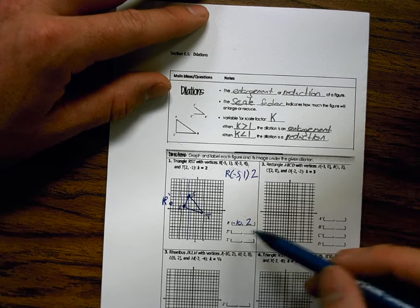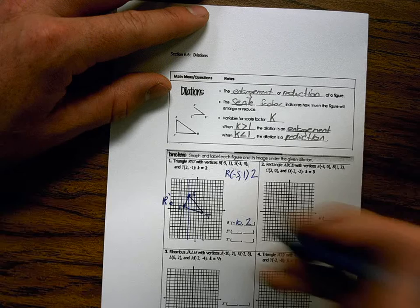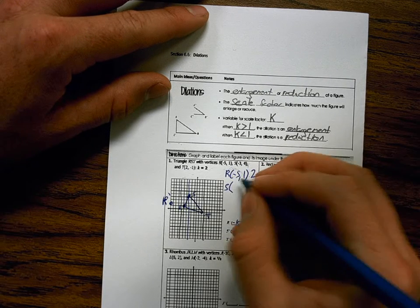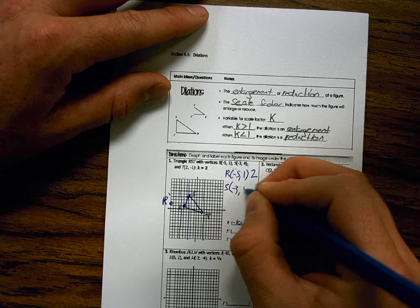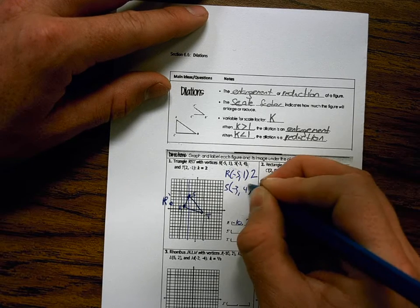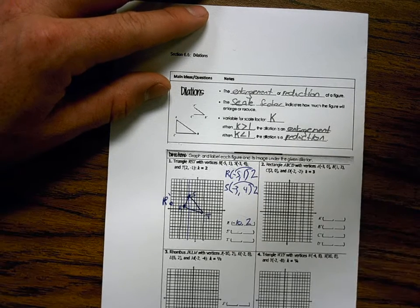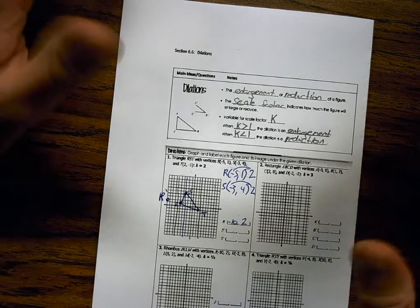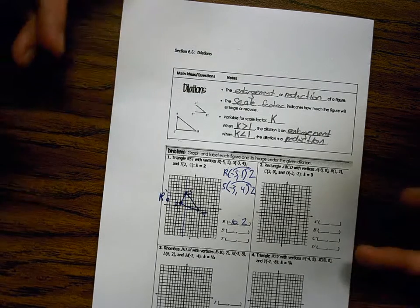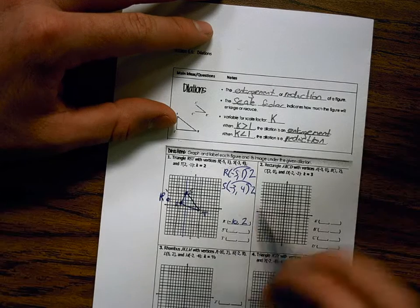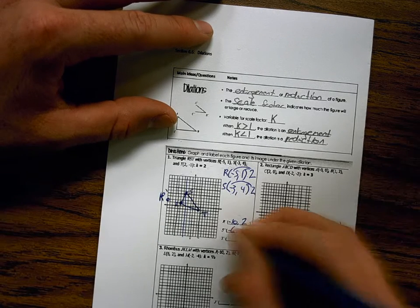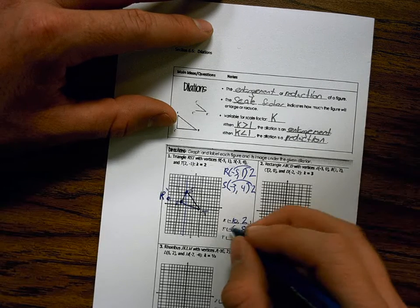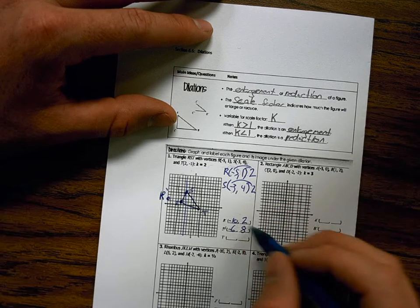Okay, I'm going to do the same thing for point S. S prime. Negative 3 times 2 and 4 times 2. Again, I'm doing this because everything is getting twice the distance from 0. It's growing. It's doubling. Negative 3 times 2 is negative 6. 4 times 2 is 8. So S prime will be located here.